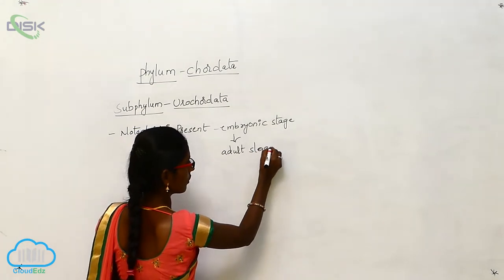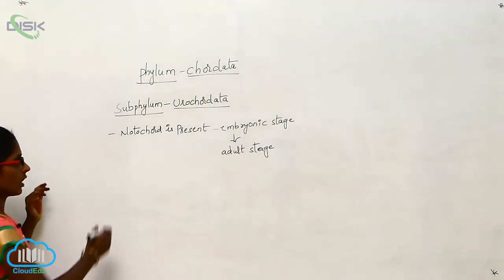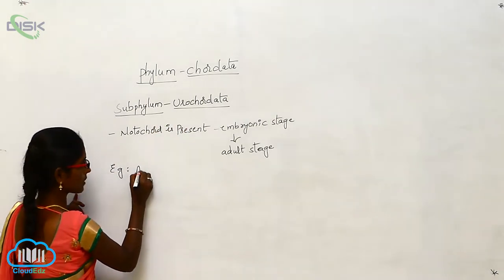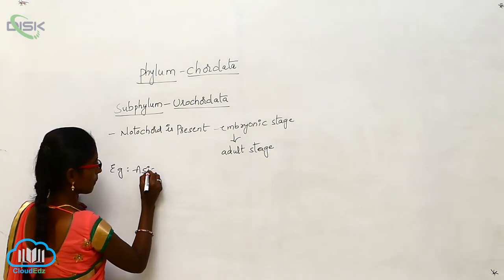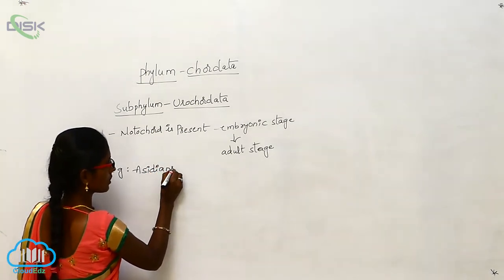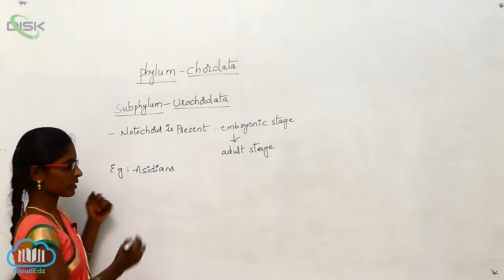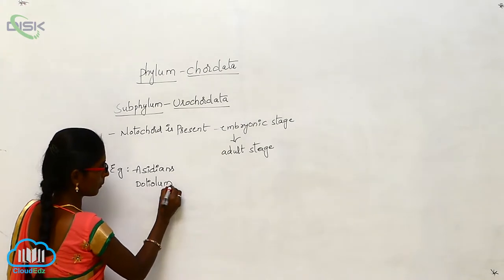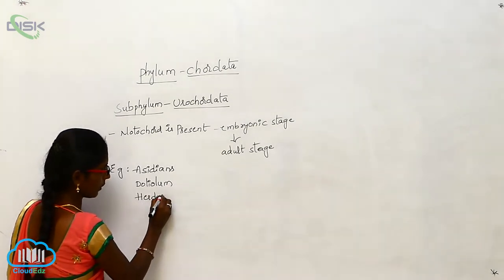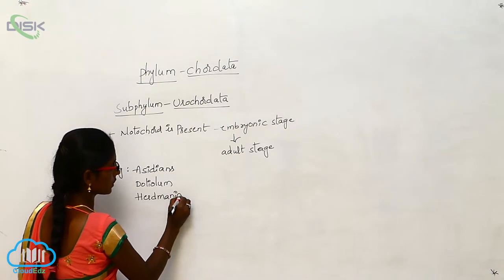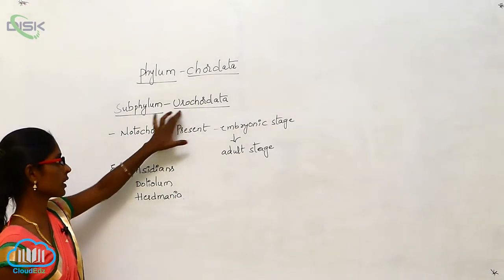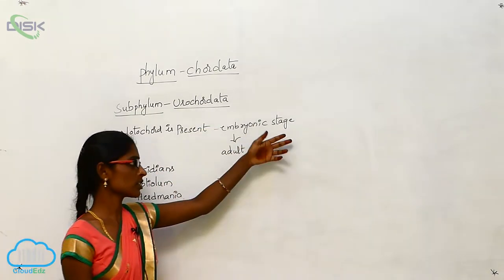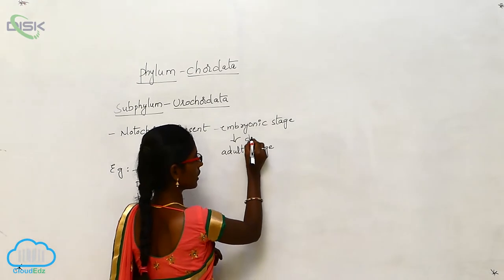Examples for Subphylum Urochordata are Salpa, Doliolum, and Herdmania. The notochord is present at the embryonic stage and disappears at the adult stage.